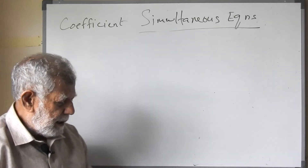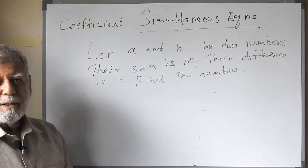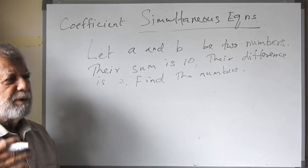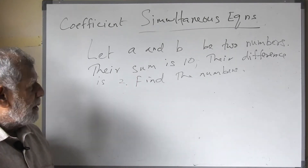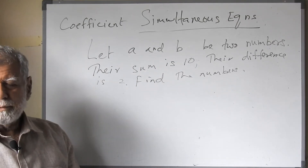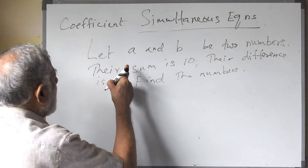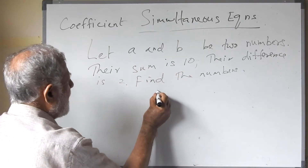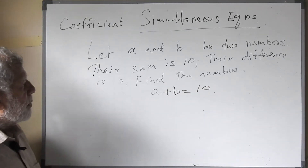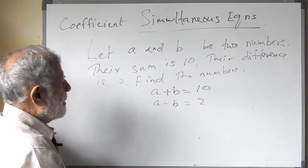Now we have done quite a few small equations and we will take one or two simple word problems. Let a and b be two numbers. Their sum is 10 — sum here means the total when adding. So we write a plus b equals 10. And their difference is 2, meaning one number minus the other, so we write a minus b equals 2. These are our two equations.